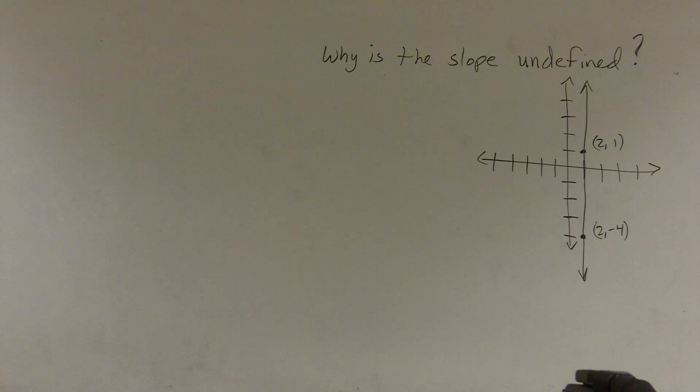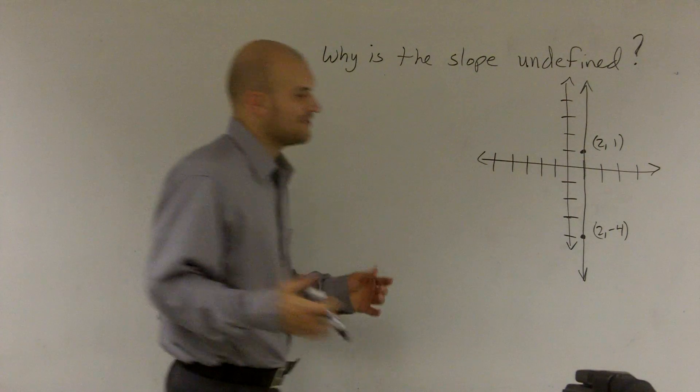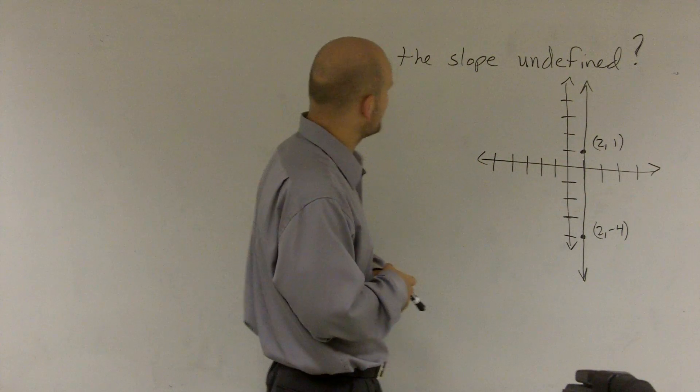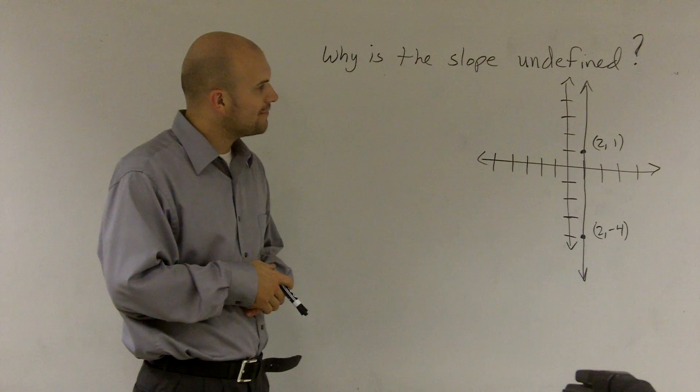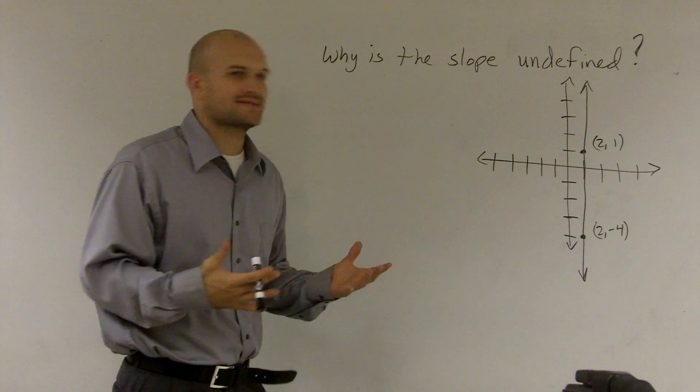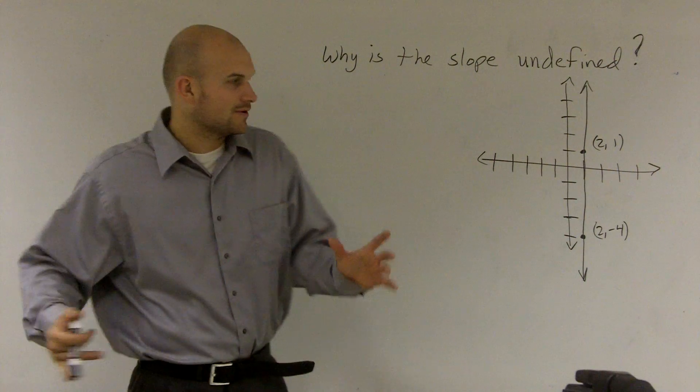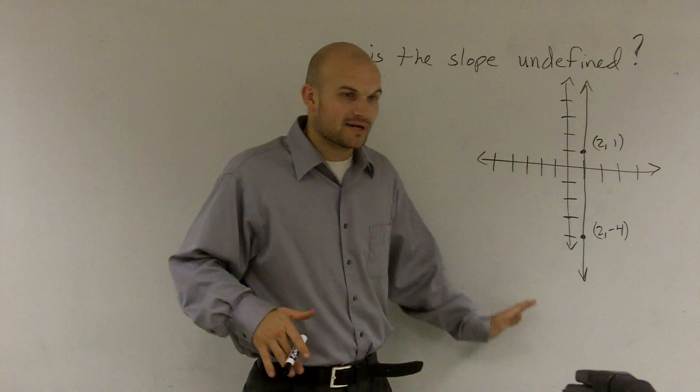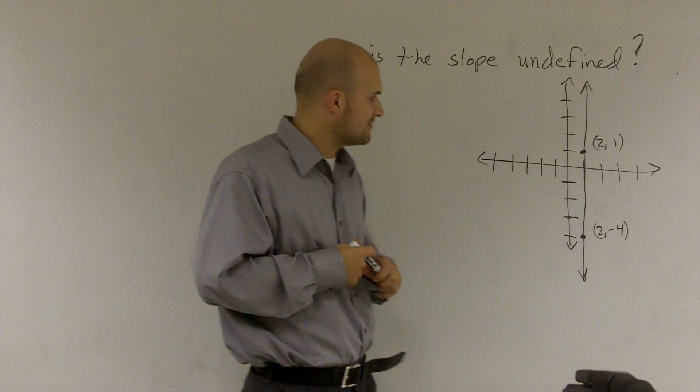All right. Why is the slope undefined? So let's take a look at this problem. A lot of times students come up to me and say, why is it undefined? Why is it not zero? We have a slope. It is going up or down. Where are we getting this undefined?